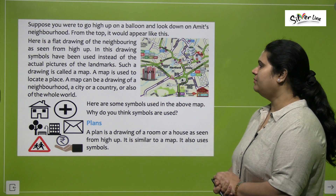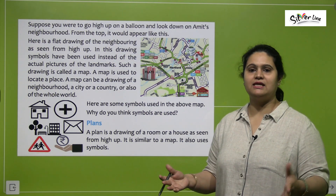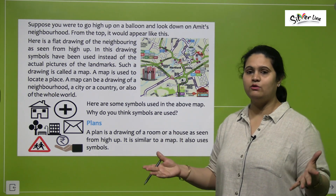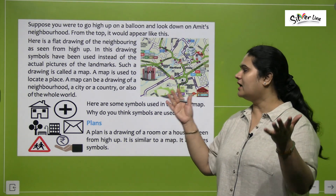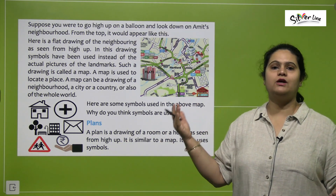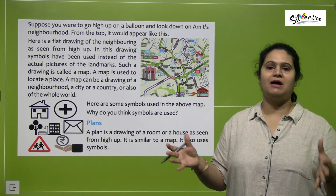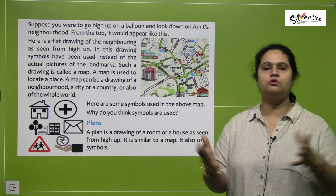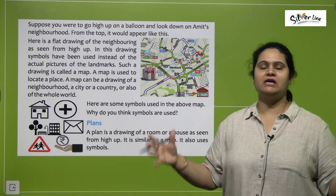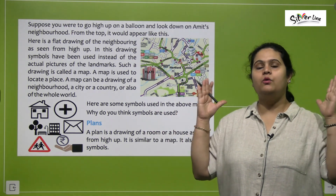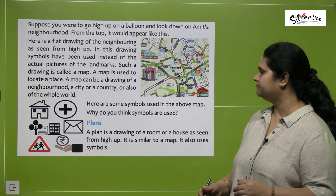So, a map can be a drawing of a neighborhood, ki kisi neighborhood ki drawing ho sakti hai, kisi city ki ho sakti hai, ya kisi country ki ho sakti hai, aur even of the whole world. Ek map jo hai, aapko sab kuch dikha sakta hai — it can show you the entire world in a flat drawing.